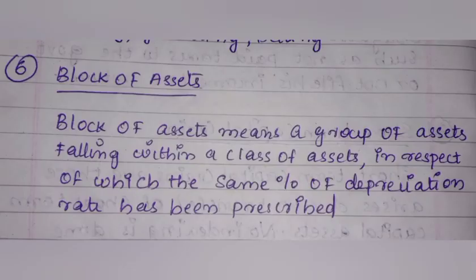The next thing is block of assets. Block of assets means a group of assets falling within a class of assets. It is a group of assets divided into many groups where the same percentage of depreciation rate has been prescribed. If assets share the same depreciation rate, they form a block of assets.